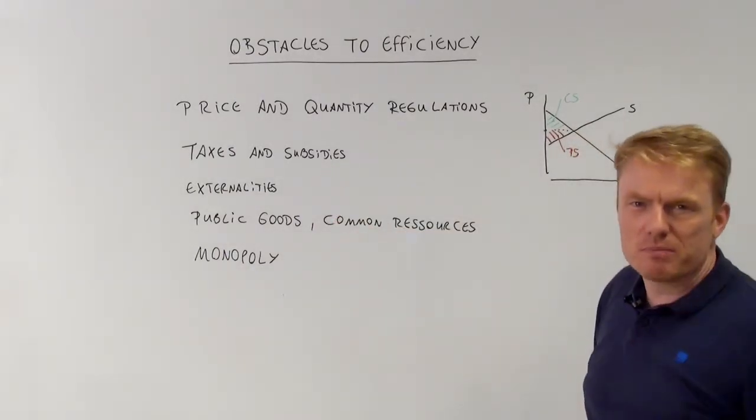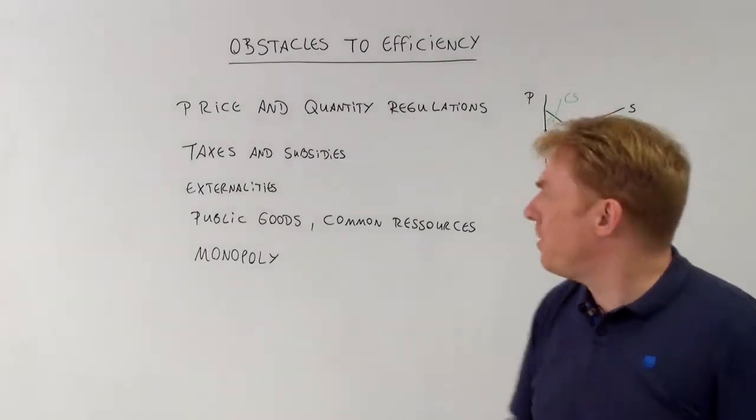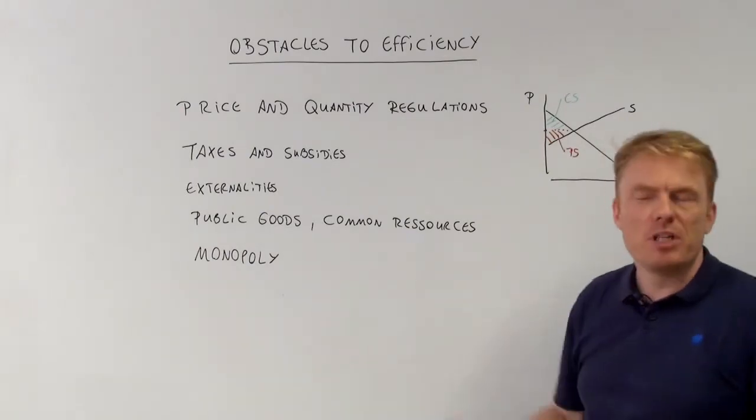Taxes and subsidies lead to the same, lead to a reduction of social welfare. So do externalities, public goods and monopoly.